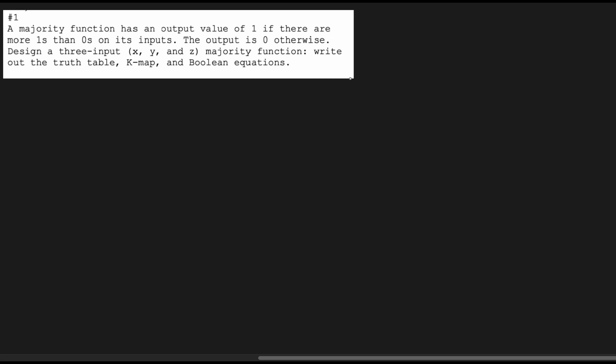For this problem, we have a majority function that has an output value of one if there are more ones than zeros in our inputs, otherwise our output is zero. We are going to design with inputs x, y, and z. For our Boolean functions, we're going to make both a truth table and a K-map. The truth table will have columns for x, y, and z.